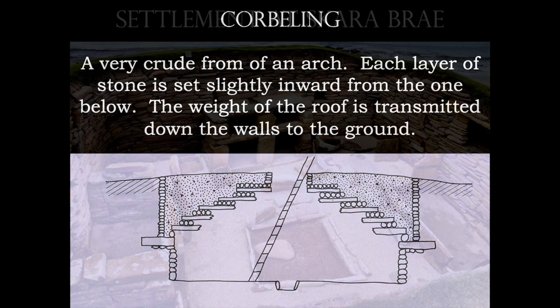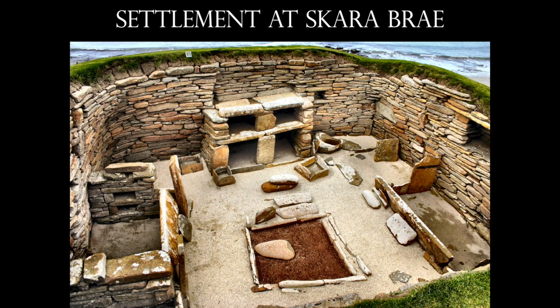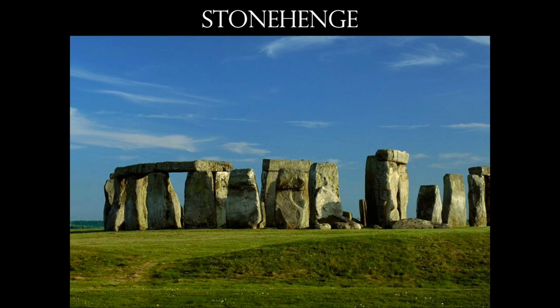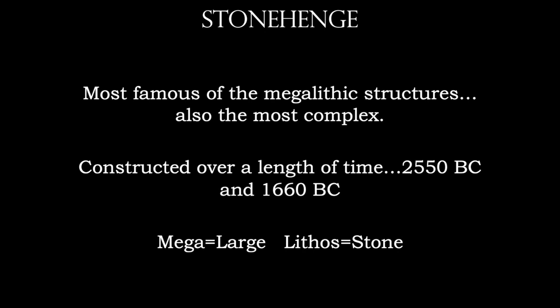Against the back wall, the bookcase-looking object is done with the post and lintel system — we'll see this in various forms of architecture, where the posts support the lintel, and the lintel is strong enough to keep the posts upright. Stonehenge is built with the post and lintel structure, and is the most famous megalithic of all time, currently considered the most complex. It's been built on again and again through successive generations, with most of the time period traced from 2500 BC to about 1600 BC.